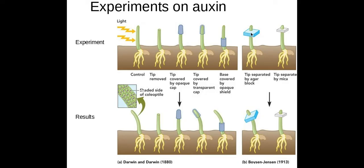Finally in these last two, we have a tip separated by an agar block which allows the auxin to spread down the plant and then diffuse down the shoot, so therefore it will bend towards the light. Whereas in the last one here, the mica prevents the diffusion of auxin down the shoot tip, so therefore auxin has no impact further down the shoot causing it to bend, so it doesn't bend.